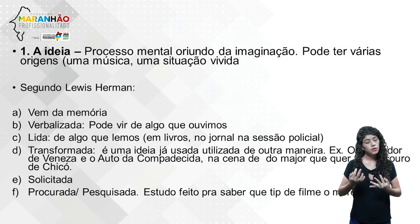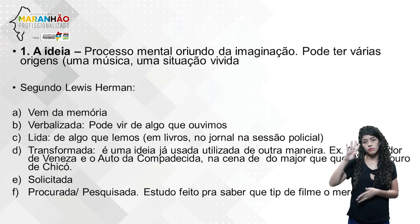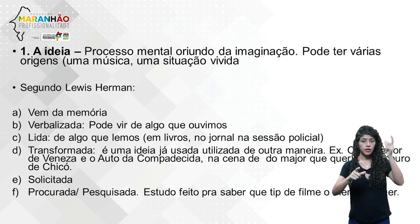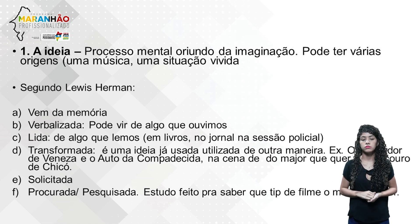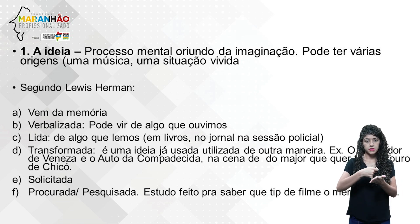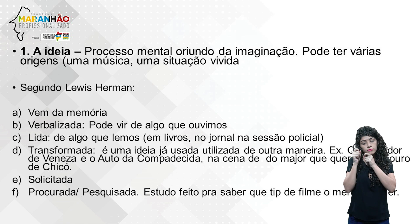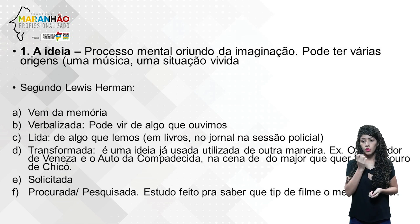Vamos destrinchar um pouco mais sobre essas cinco etapas. A primeira é a ideia, que é o processo mental oriundo da imaginação. Essa criatividade pode ter várias fontes. Citei o exemplo da Mônica Goldenberg, que escreveu um roteiro belíssimo a partir de uma música. Você pode ter também uma situação vivida, uma cena que você vê na rua, que te inspira a escrever uma história inteira. Um mínimo acontecimento pode dar origem a uma ideia.